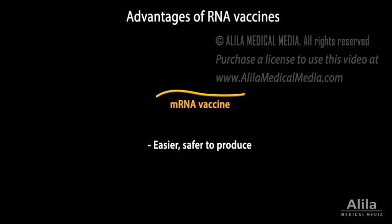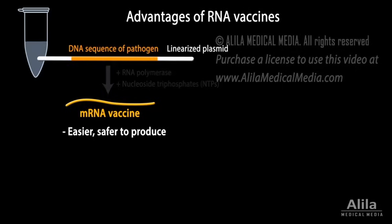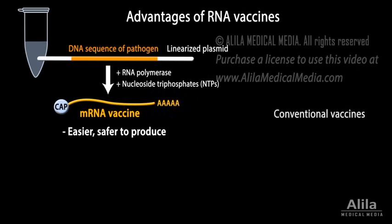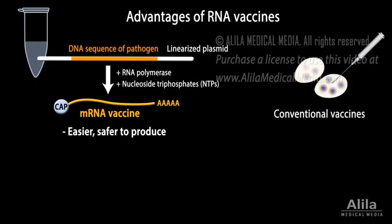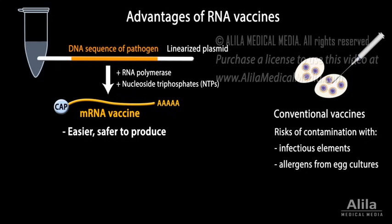RNA vaccines are easier and safer to produce than conventional vaccines. This is because mRNA molecules can be synthesized in a cell-free system using a DNA template with a sequence of the pathogen, while conventional vaccines usually require a more complicated and risk-prone process of growing large amounts of infectious pathogens in chicken eggs or other mammalian cells. Without the risks of being contaminated by infectious elements or allergens from egg cultures, RNA vaccines are also safer for patients.